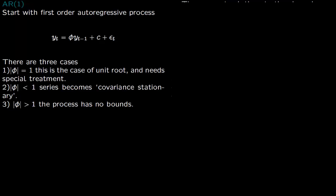Now we come to time series proper. We first start with the AR(1) process. AR stands for autoregressive process, and the one refers to the lag — so this is a first-order autoregressive process. yt depends upon the past variable yt-1 multiplied by some constant phi, plus a constant c and an error term epsilon t. This epsilon t is normally distributed with mean 0 and variance sigma squared. For our simulation we will always take epsilon as N(0,1), but you can make appropriate changes in the code to incorporate a different variance.